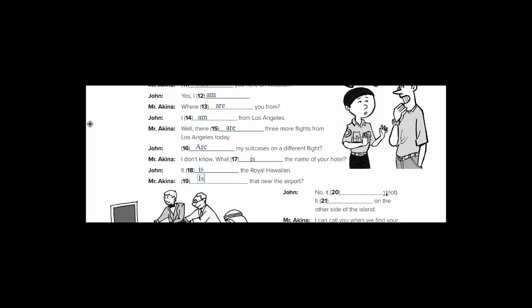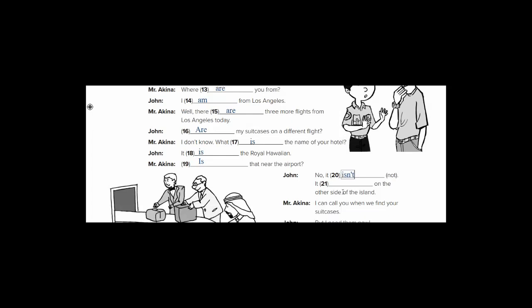John said, no, it is not or no, it isn't. Both are correct. It is on the other side of the island. What's the meaning of the other side of the island? الجانب الآخر من الجزيرة. Look at island - we don't say Iceland, we say island because the S is silent.